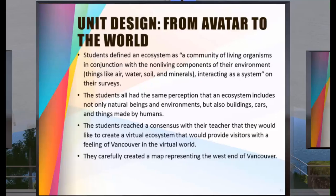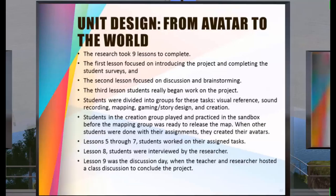Students defined an ecosystem as a community of living organisms in conjunction with the non-living components of their environment — things like water, air, soil, and minerals — interacting as a system. The students all shared the perception that an ecosystem included not only natural beings and environments, but also buildings, cars, and things made by humans. The students reached a consensus with the teacher that they would like to create a virtual ecosystem providing visitors with a feeling of Vancouver in the virtual world, and they carefully created a map representing the west end of Vancouver.